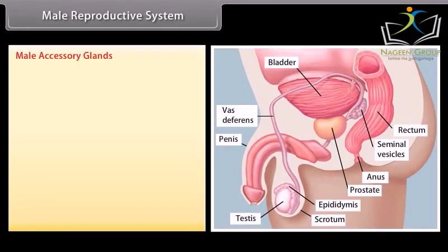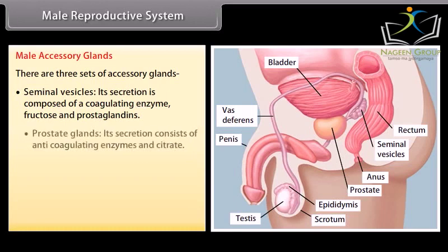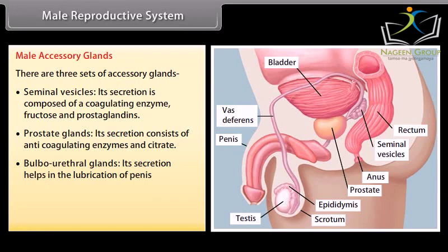There are three sets of male accessory glands. Seminal vesicles — their secretion is composed of a coagulating enzyme, fructose, and prostaglandins. Prostate glands — their secretion consists of anticoagulating enzymes and citrate. Bulbourethral glands — their secretion helps in lubrication of the penis. Secretions of these glands constitute the seminal plasma.